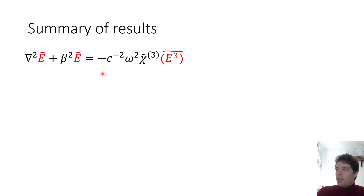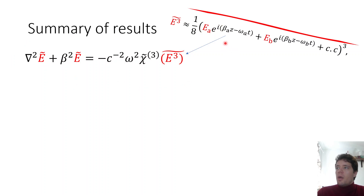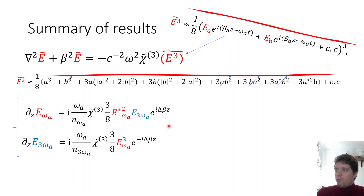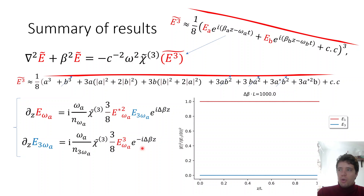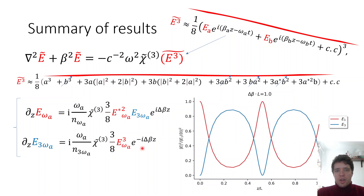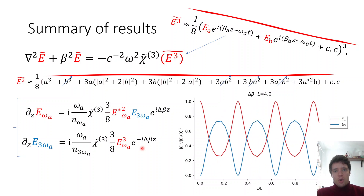To summarize: using the master equation with the E-cubed expansion containing two frequency terms, and applying the concept of phase matching to cancel non-phase-matched terms, we arrive at a model for third harmonic generation that can be solved numerically. I hope you found this video interesting. Feel free to check out some of my other videos, and stay tuned for more.